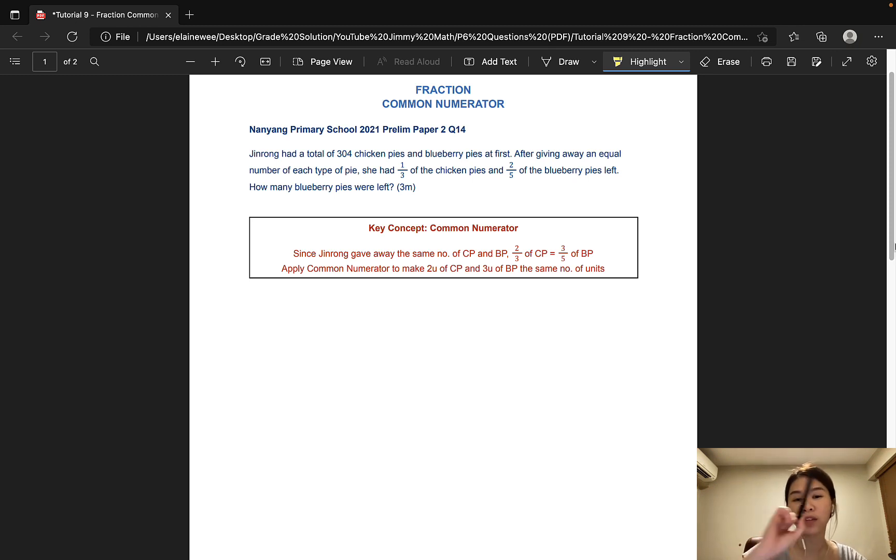A simple example will be, one third of the apples is equal to two third of the oranges. So one third here is equal to two third here, therefore equal fraction.